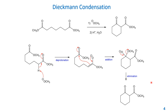To summarize Claisen condensation: all the examples follow a very similar mechanism of three steps — deprotonation, addition, and elimination — showing another example of reactions of enolate. If you have any questions please let me know, and good luck.